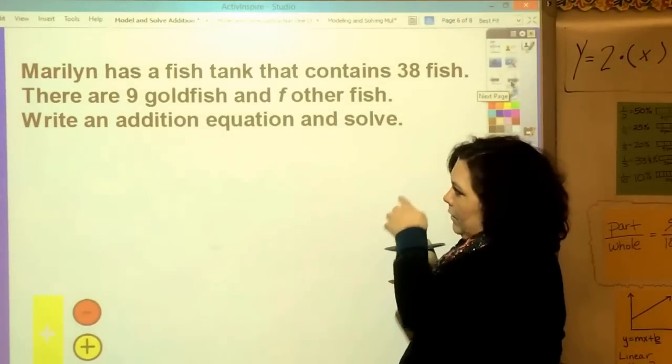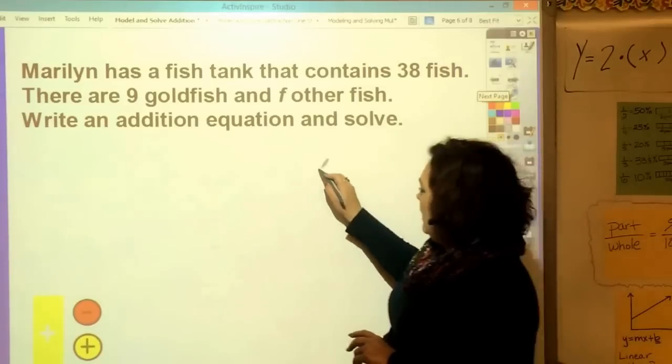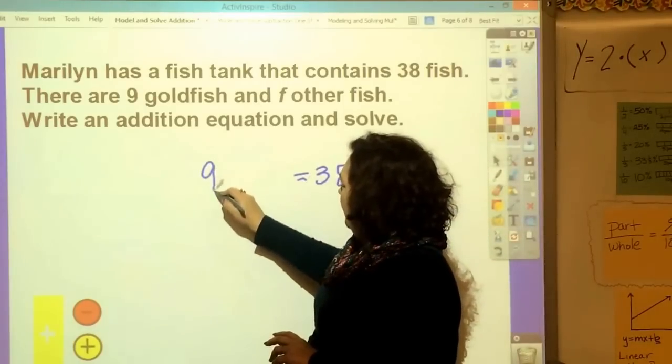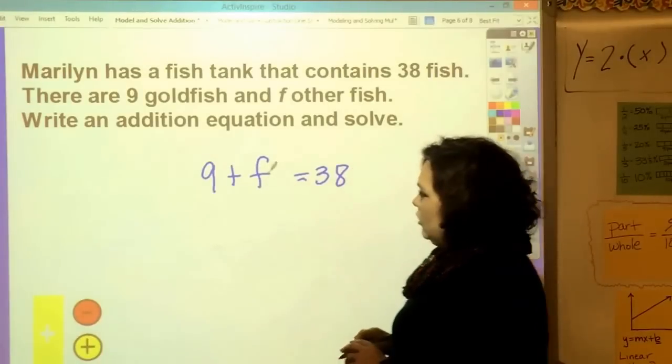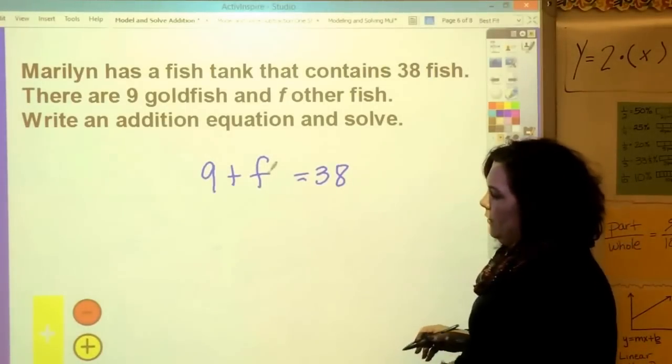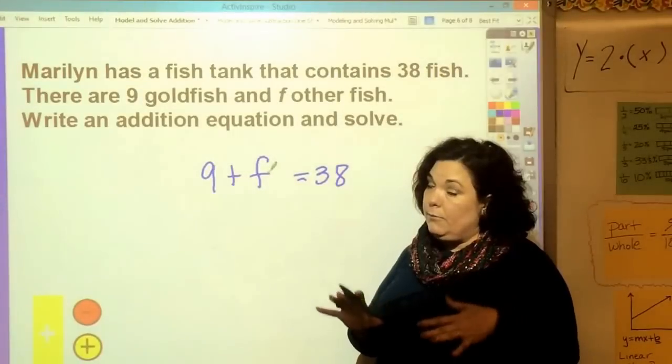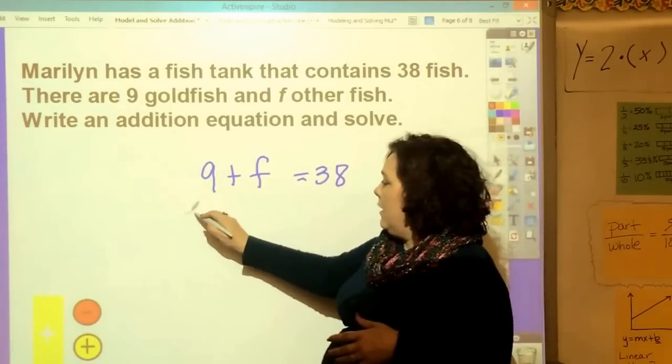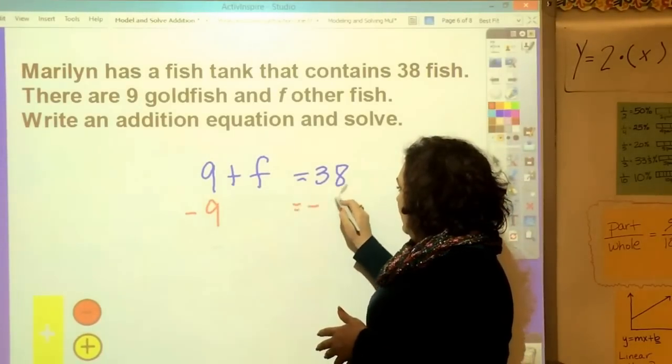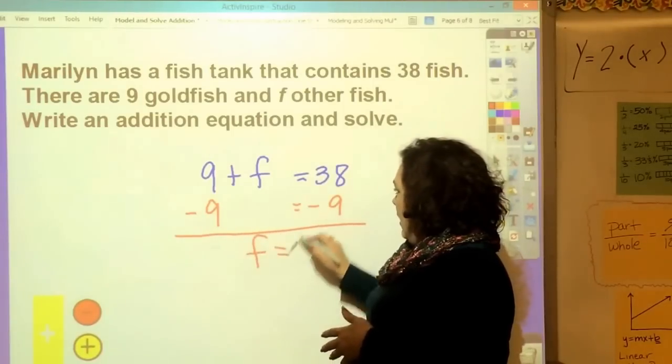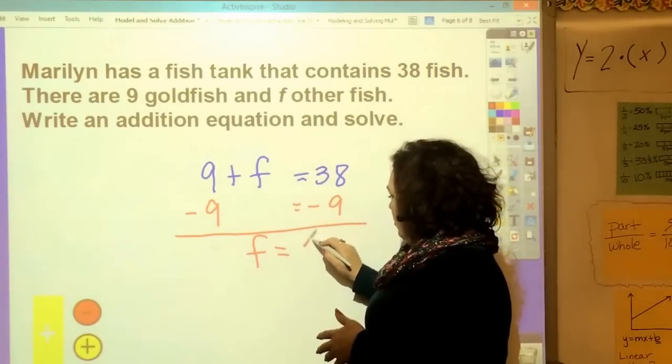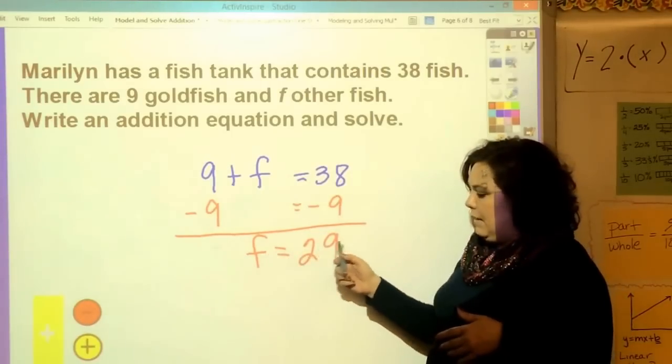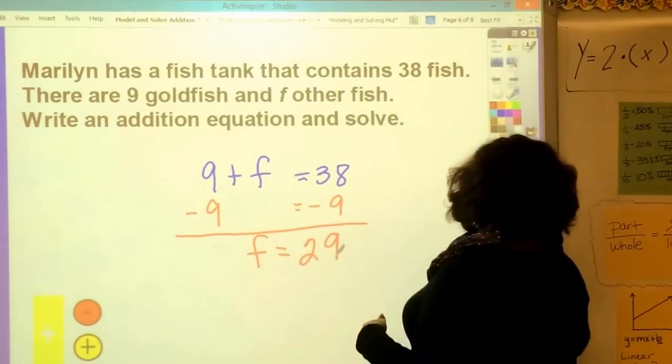You're going to see these in a word problem. Marilyn has a fish tank that contains 38 fish. That's the total. 38. And there are 9 goldfish. 9 goldfish plus F other fish. Write an addition equation and solve. Here's my addition equation. Now, it's to the point where there's too many integer chips for me to draw. But, I can subtract 9 from this side and subtract 9 from this side. And so, F would come down and 38 minus 9 is 29. So, they have 29 fish.